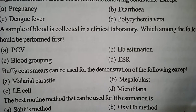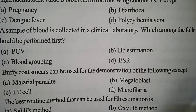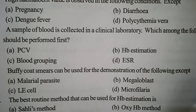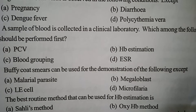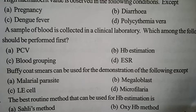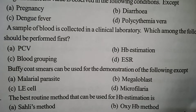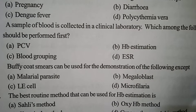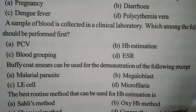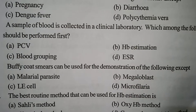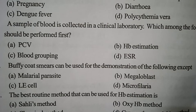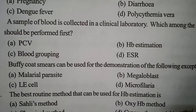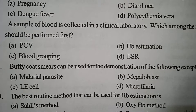Next one. Buffy coat smears can be used for the demonstration of the following. Option A: Malarial parasite. Option B: Megaloblast. Option C: LE cell. Option D: Microfilaria. Correct answer: Option D — Microfilaria.